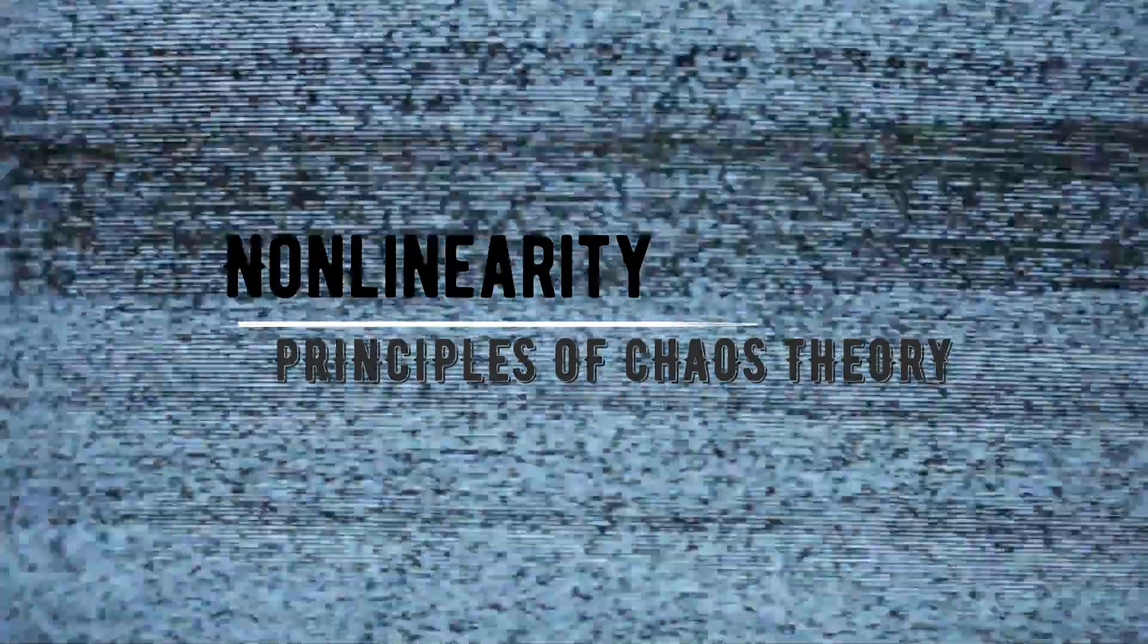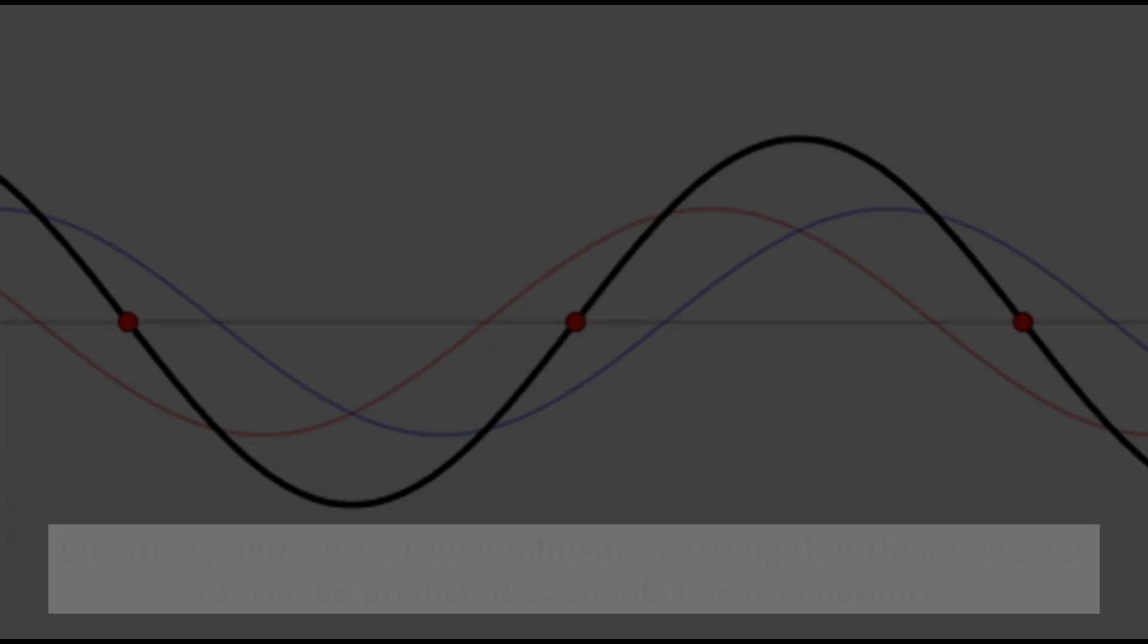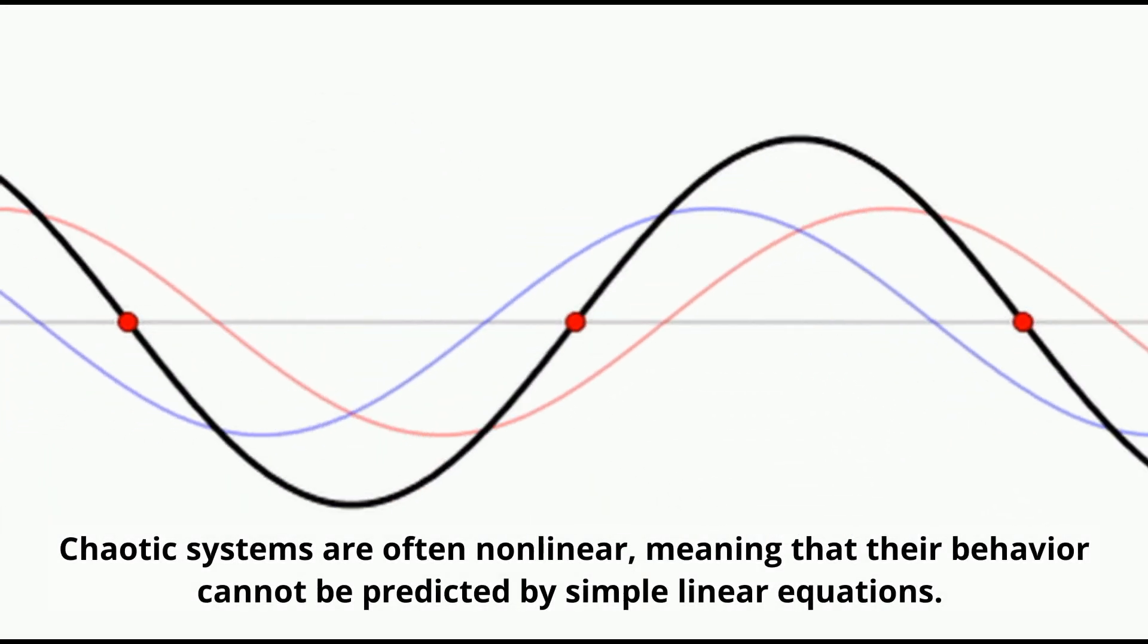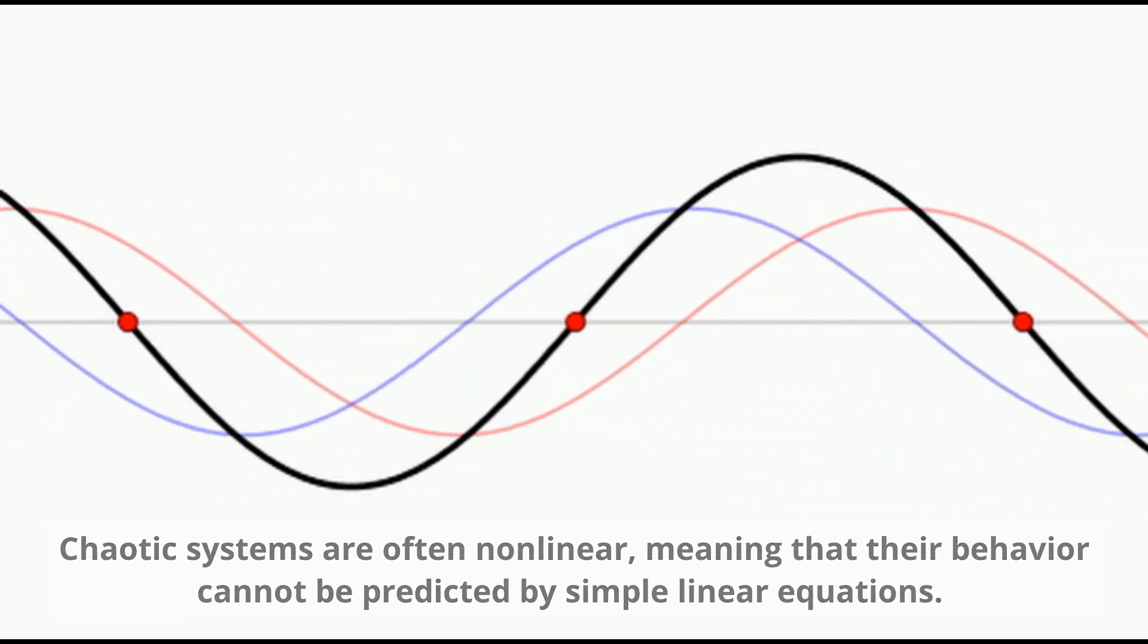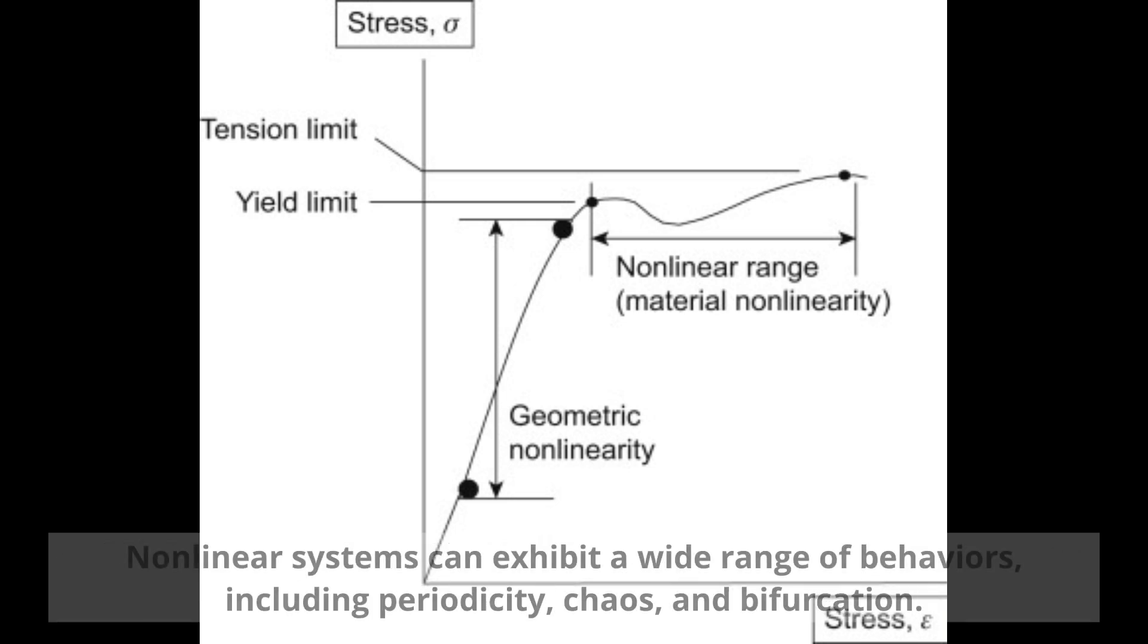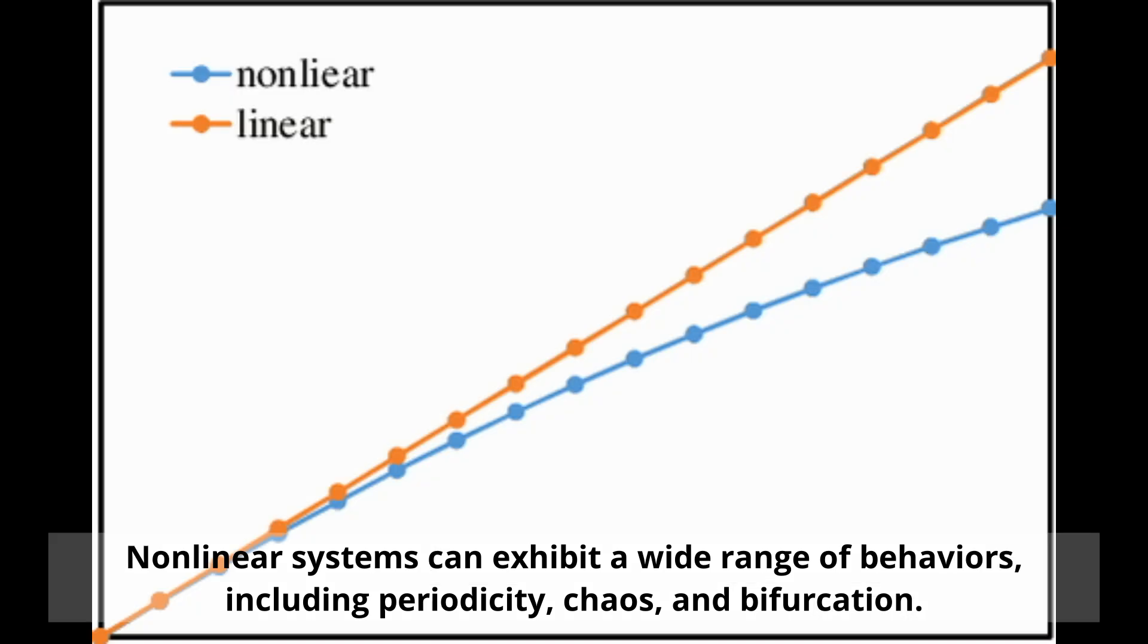Non-Linearity. Chaotic systems are often non-linear, meaning that their behavior cannot be predicted by simple linear equations. Non-linear systems can exhibit a wide range of behaviors, including periodicity, chaos, and bifurcation.